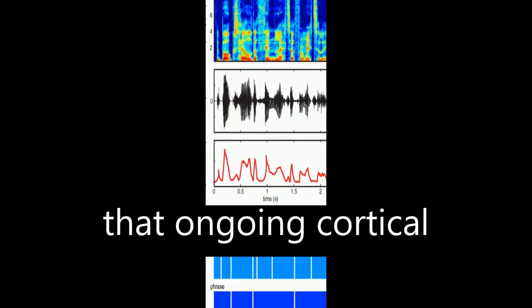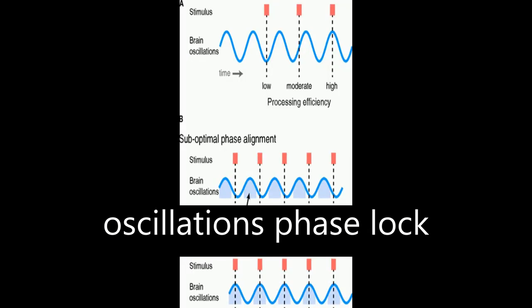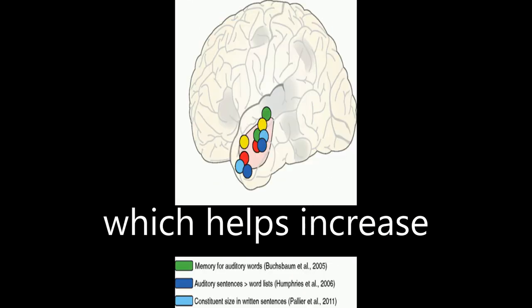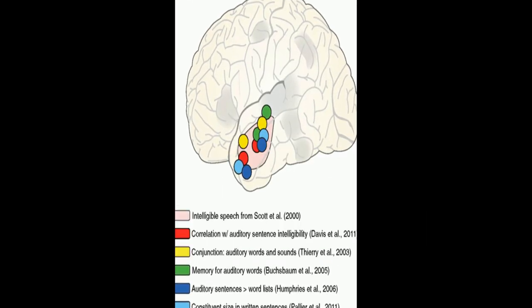Neuroimaging data shows that ongoing cortical oscillations phase locked to low-frequency information, 4 to 8 Hz, in the speech envelope, which helps increase sensitivity to relevant acoustic cues.